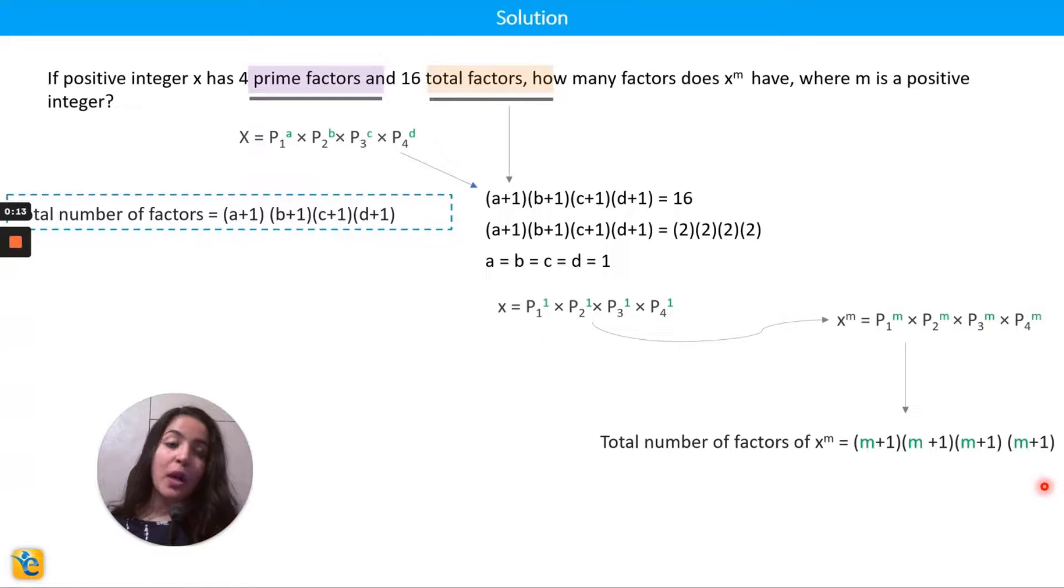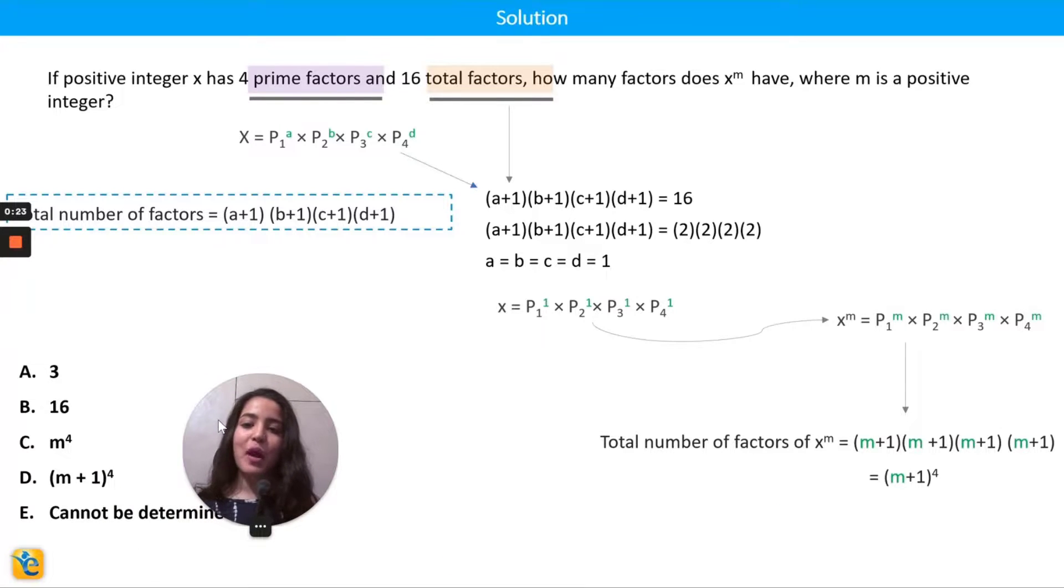So if I multiply m+1 with itself 4 times, what I get is (m+1) to the power of 4. So the final answer here for this problem is (m+1) to the power 4, option D.